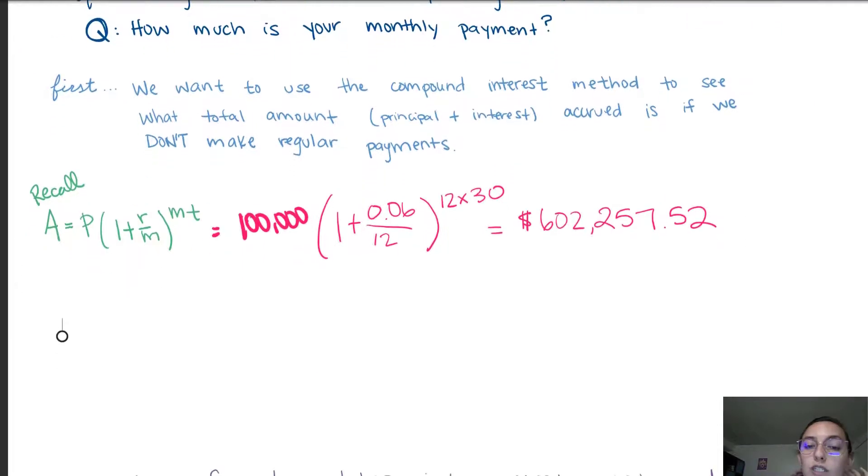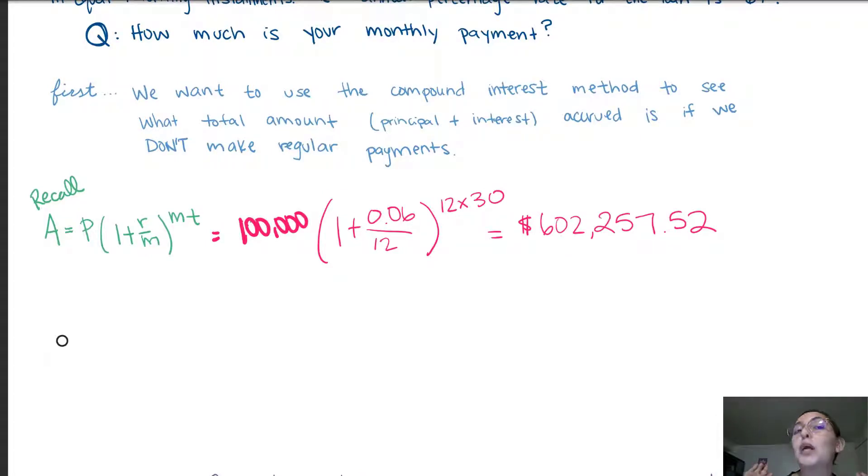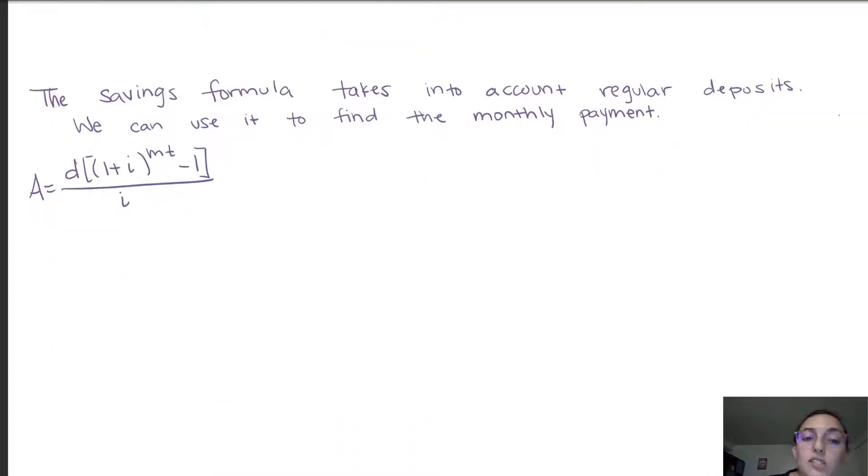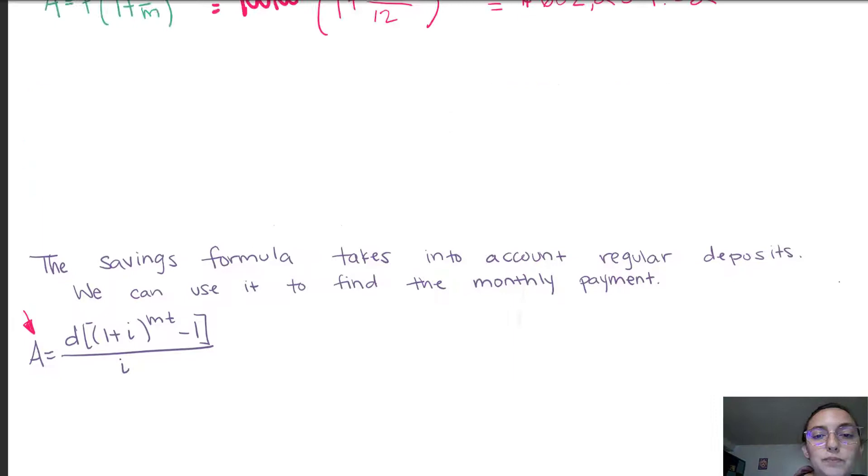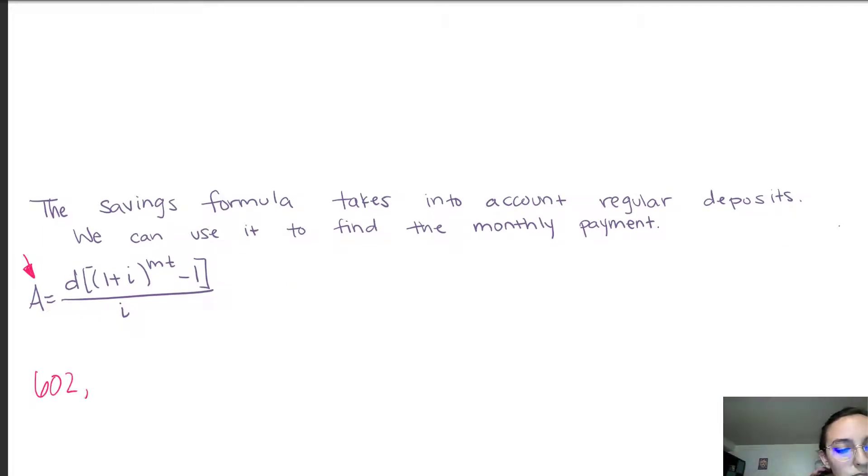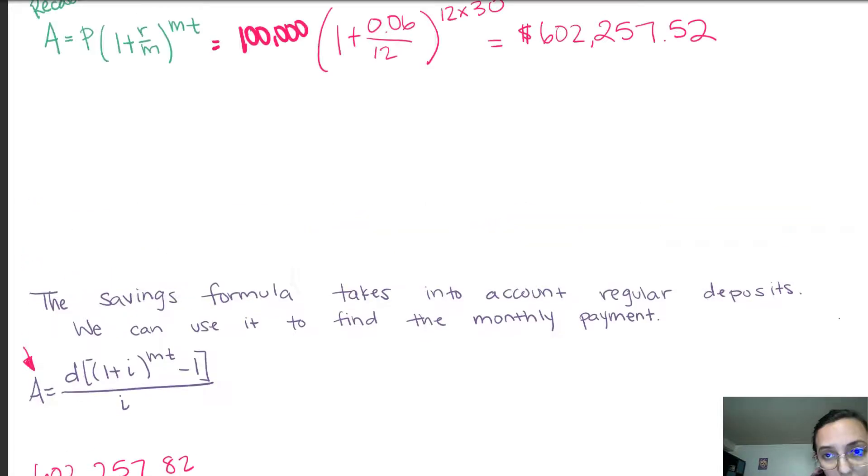Now in using this rule as I mentioned already several times we are not making regular payments. But in previous videos we derived a rule that does take into account making regular payments. Do we remember? It's our savings formula. So the savings formula does take into account making regular deposits. We can use this then to find our monthly payment. This accumulated amount is going to be the amount that we derived using the compound interest rule. So the $602,257.52.